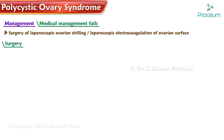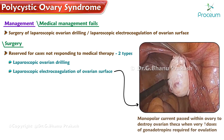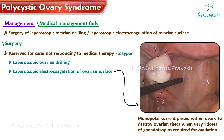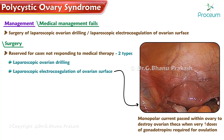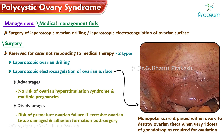Surgery for PCOS is reserved for cases not responding to medical therapy and is of two types: laparoscopic ovarian drilling and laparoscopic electrocoagulation of the ovarian surface. In this surgery, monopolar current is passed within the ovary to destroy the ovarian theca when very high doses of gonadotropins are required for ovulation. Advantages: no risk of ovarian hyperstimulation syndrome or multiple pregnancies. Disadvantages: risk of premature ovarian failure if excessive tissue is damaged, and adhesion formation post-surgery.